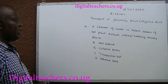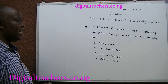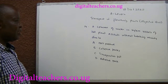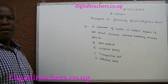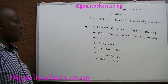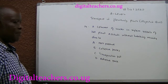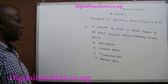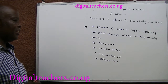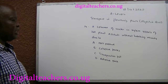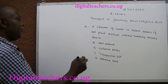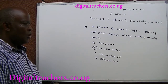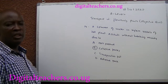Number 14. A column of water in certain vessels of a tall plant ascends without breaking mainly due to A. Root pressure. B. Cohesive force. C. Transpiration pull. D. Adhesive force. You can pause and answer. The answer is B. Cohesive force.